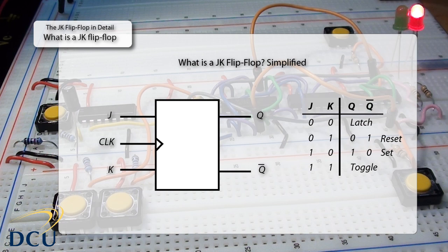Let's look at the basic block operation of a JK flip-flop. The symbolic representation shows three inputs and two outputs. We're primarily concerned with the J and K inputs and the Q output. The clock must be present for a state change to take place. The Q-bar output is always the reverse of Q in a JK flip-flop — it's handy to have an inverted output but can essentially be ignored for now.